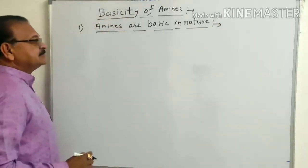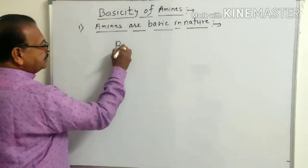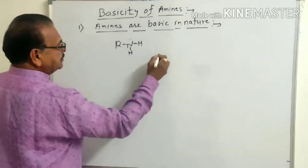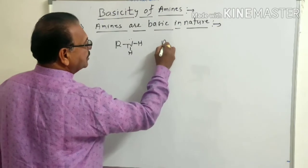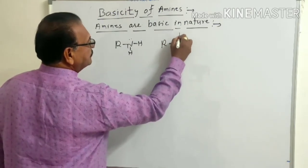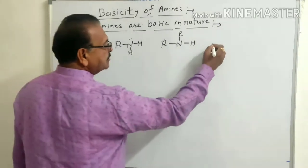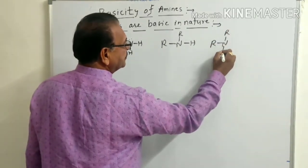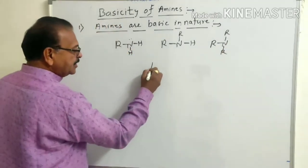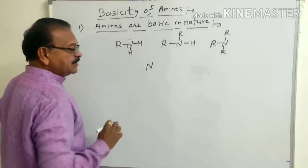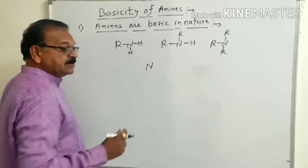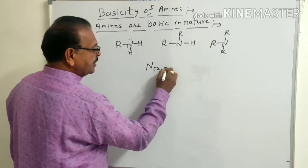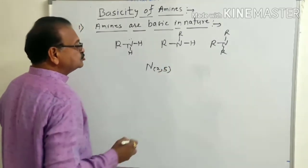We know that primary amines have the formula RNH2. Secondary amines have the formula R2NH. And tertiary amines have the formula R3N. Nitrogen has 7 electrons — its atomic number is 7 — therefore it contains 2 electrons in the first shell and 5 electrons in the outermost shell.